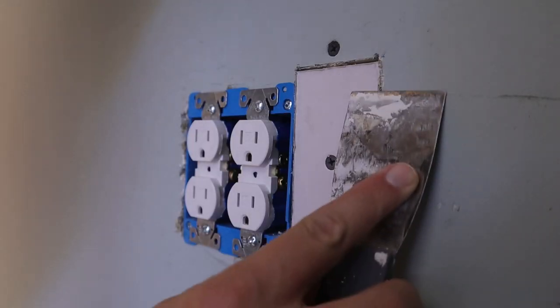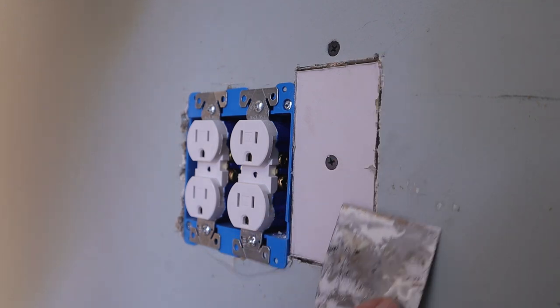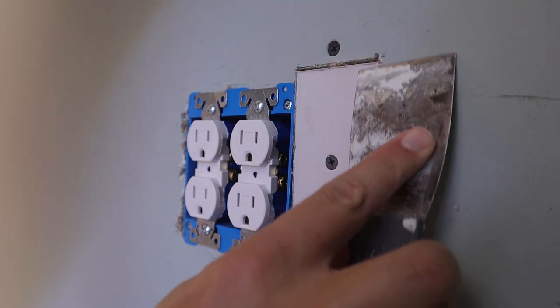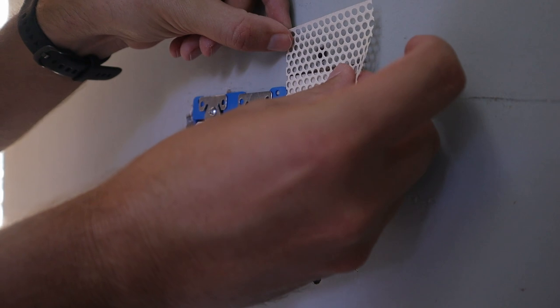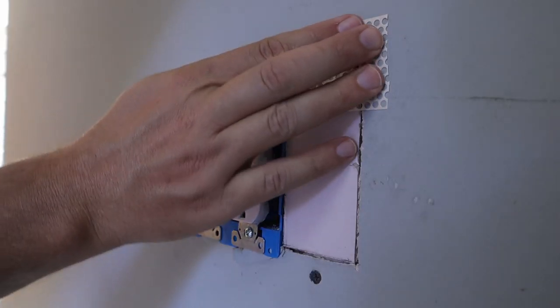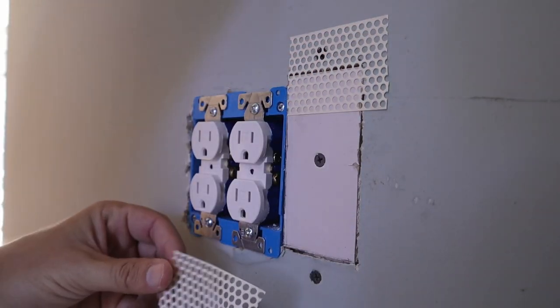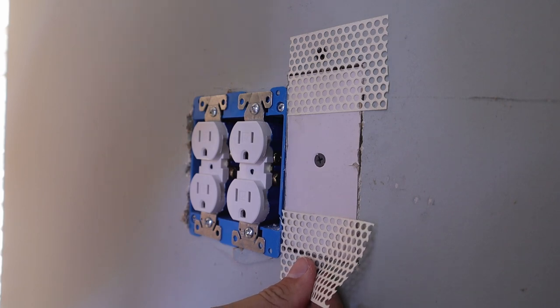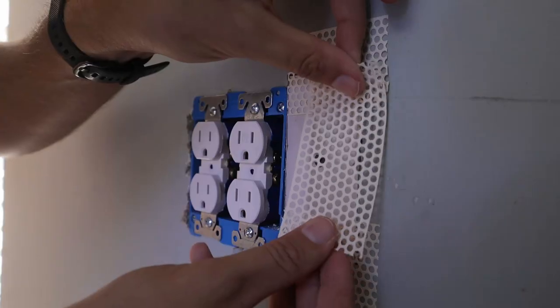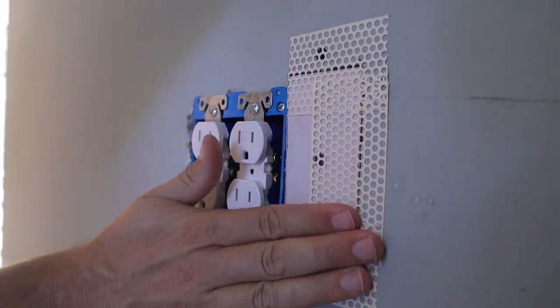Now I'm just going to go around real quick with my putty knife to knock off any excess paper that's sticking up or any bumps. Now I'm going to go around all the sides of the repair applying this mesh drywall tape - this is going to help to bridge the gap between the repair piece and the drywall that's already there. It's also going to help with mudding all this in.